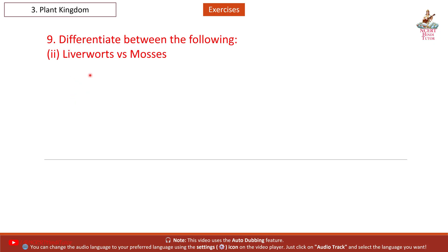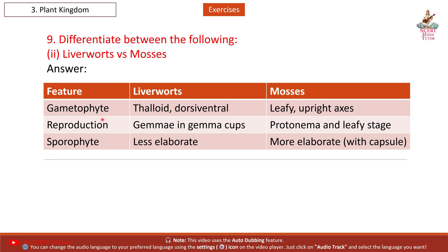Second: Liverworts versus Mosses. Feature — Gametophyte: Liverworts — thaloid, dorsiventral; Mosses — leafy, upright axis. Reproduction: Liverworts — gemmae in gemma cups; Mosses — protonema and leafy stage. Sporophyte: Liverworts — less elaborate; Mosses — more elaborate with capsule.